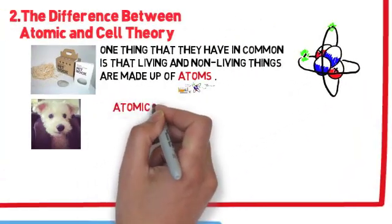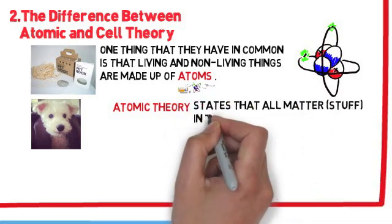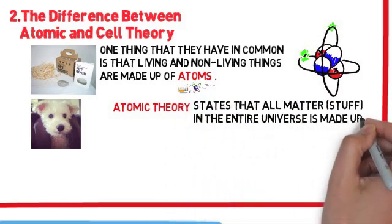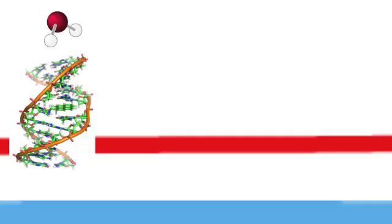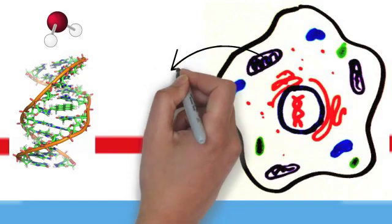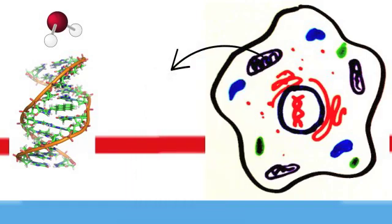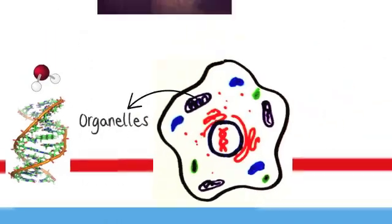Now there is the atomic theory. Atomic theory simply states that all matter or stuff in the entire universe is made up of tiny units called atoms. And these atoms can combine to make molecules, like that water molecule, and now this DNA molecule. And they can even combine to make organelles, like the fats, lipids, carbohydrates make up all these little organelles that we find in cells.